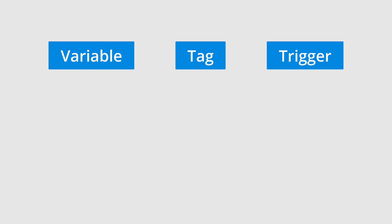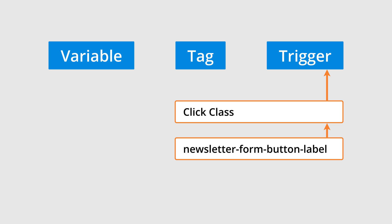And we'll also create a trigger. A trigger lets us control when to fire the tag. We will configure the trigger to look at the information available in the variable, and if the details match the button we want to track, then the trigger will fire our tag and the tag will send data to Google Analytics.